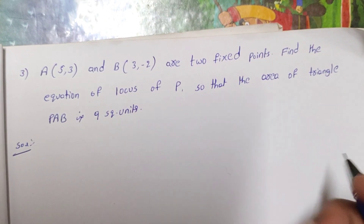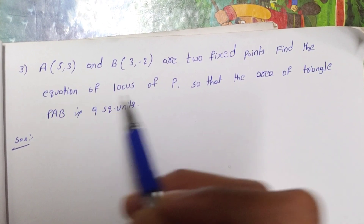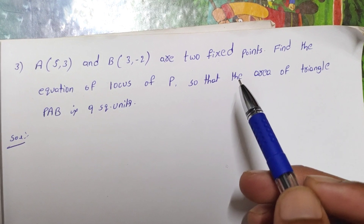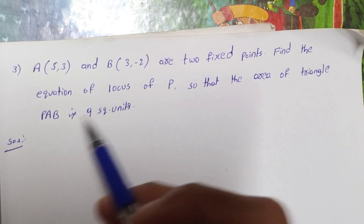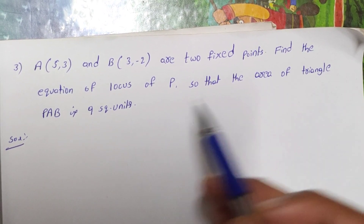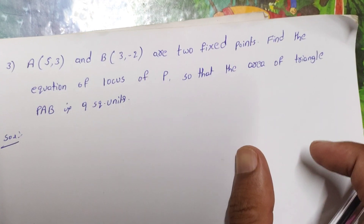So first, we will talk about the point A(5,3) and B(3,-2). To find the point, find the equation of the locus such that the area of the triangle PAB is 9 square units.